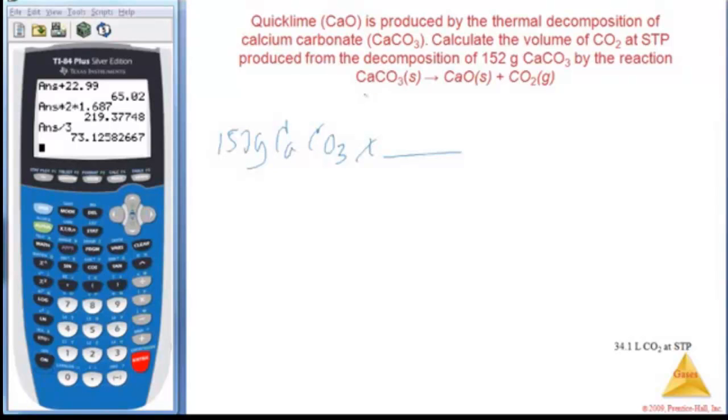And once I know how many moles of that I have, I can use stoic. I can figure out how many liters of carbon dioxide I need, right? It said all at STP, which makes this really simple. So I've got to figure out the molar mass of calcium carbonate.